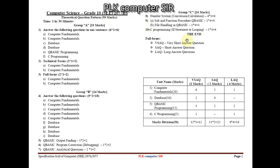To summarize the marks distribution by topic: Computer Fundamentals carries 20 marks total, Database carries 10 marks, Q Basic programming carries 15 marks, and C programming carries 5 marks — altogether 50 marks for the theoretical paper.